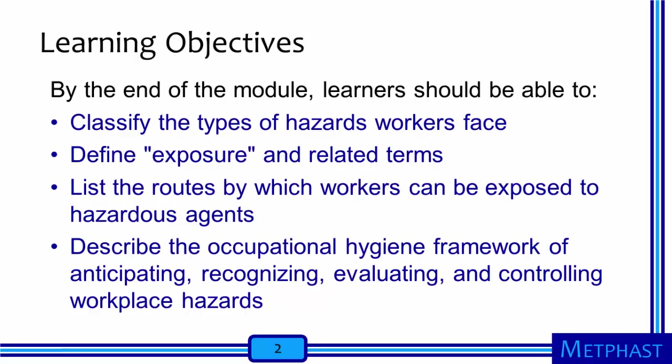The learning objectives for this module are that, by the end, learners should be able to classify the types of hazards that workers face, define exposure and related terms, list the routes by which workers can be exposed to hazardous agents, and describe the Occupational Hygiene Framework of anticipating, recognizing, evaluating, and controlling workplace hazards.